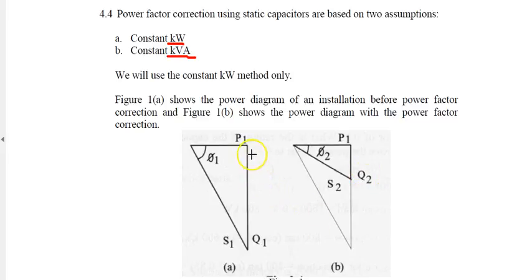Figure 1b shows the power diagram with power factor correction. Effectively we reduce the reactive power Q1 until it becomes Q2, where the real power P1 remains the same. That is the idea of improving the power factor.